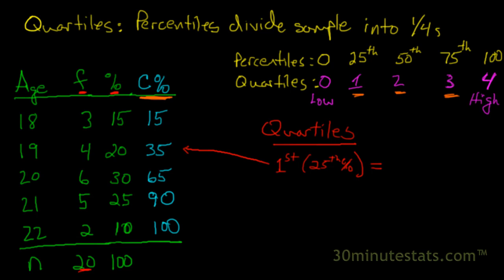So the 25th percentile has to fall in here. This section of the distribution goes from the 16th percentile to the 35th. So the 25th percentile has to be in there, and that corresponds to the age of 19. Our quartile value is going to be 19.